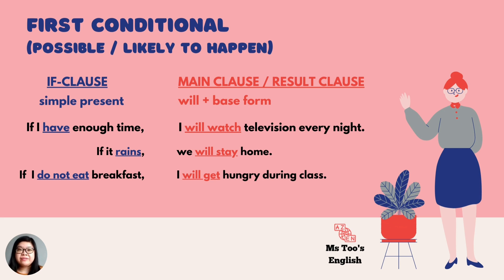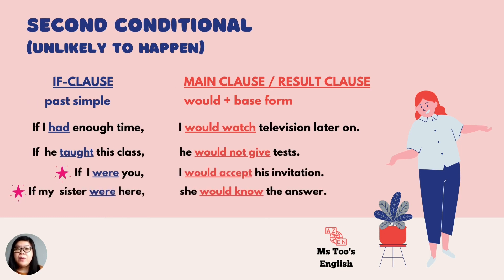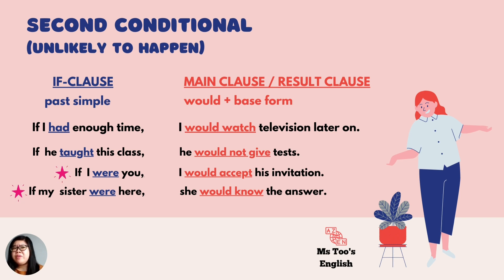And how about second conditional? When do we use second conditional? For second conditional, as compared to first conditional which is likely to happen, second conditional is when we say that something is unlikely to happen. For example, look at the four sentences. If I had enough time, I would watch television later on. Probably right in front of you I'm very, very busy — busy working, busy studying. So I tell you: if I had enough time, I'll watch television later on. But most likely it's very unlikely because I don't have time. So I use second conditional.